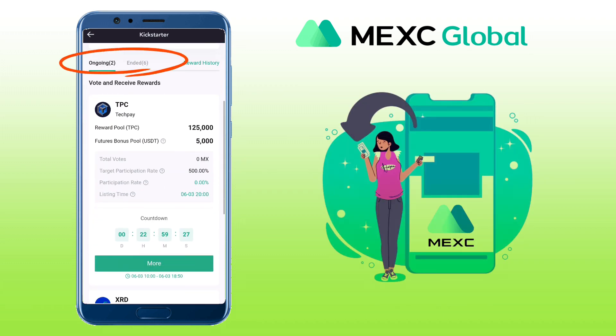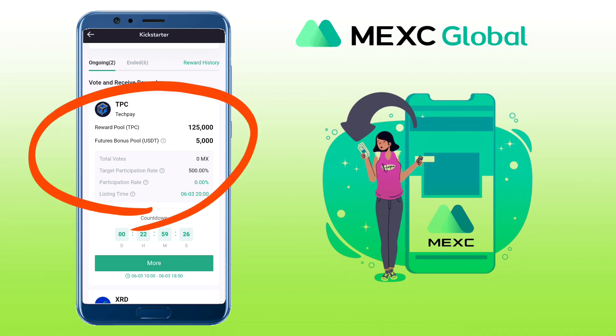Here you will see the ongoing and ended tabs, and on the left corner you will see reward history. When I recorded this video, there were two ongoing projects. For example, TPC or TechPay. Here are the details of this Kickstarter event: the reward pool is 125,000 TPC tokens, the future bonus pool is 5,000 USDT, and the target participation rate is 500%. Then it shows the listing time, and below is the countdown before voting starts.